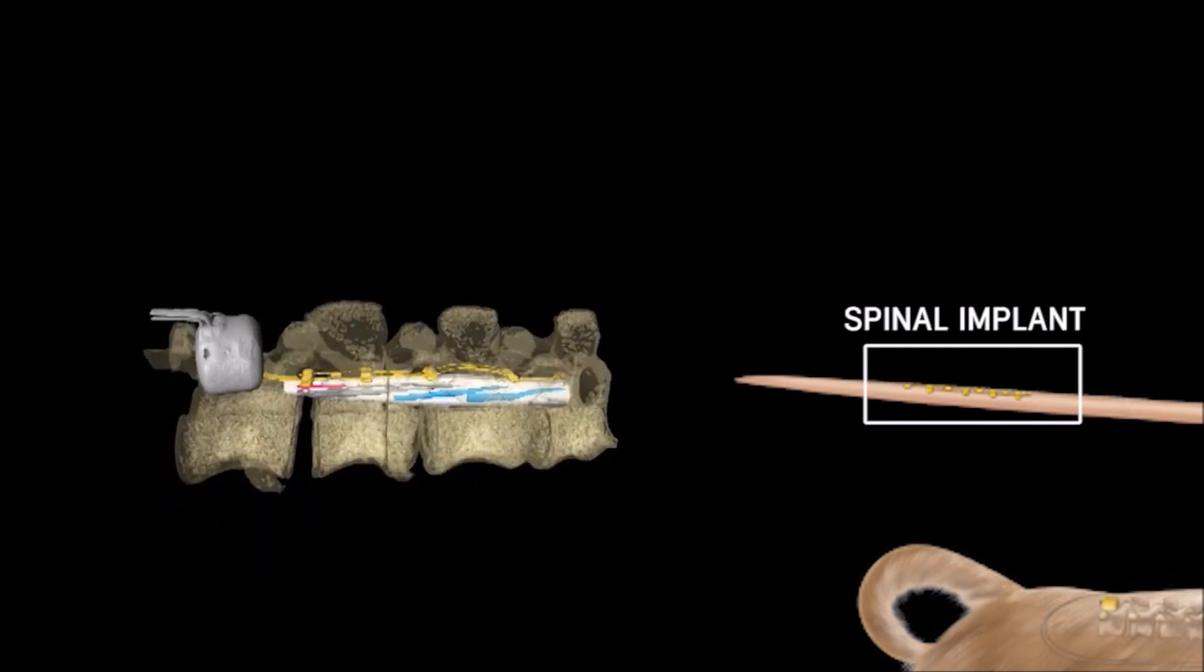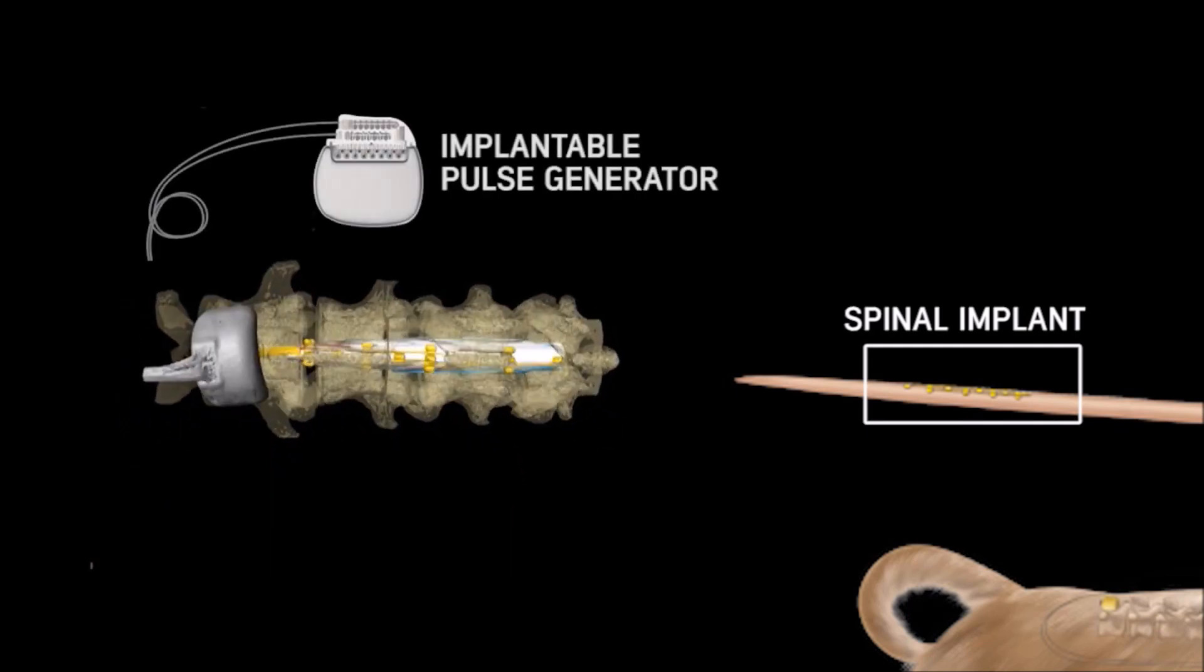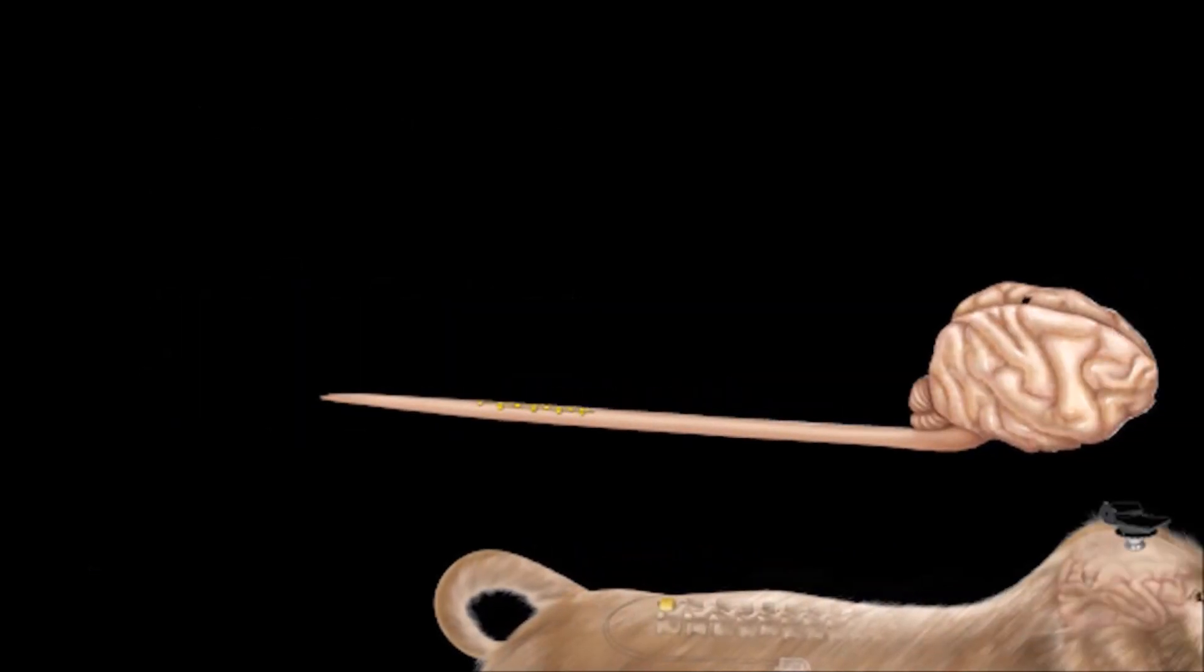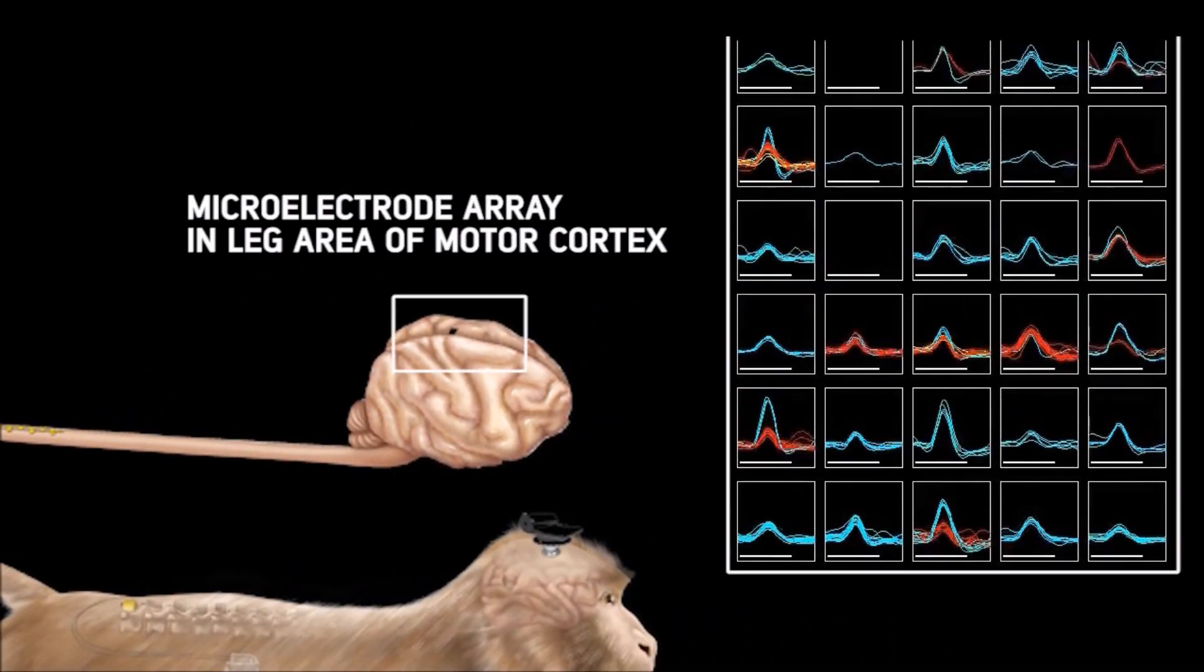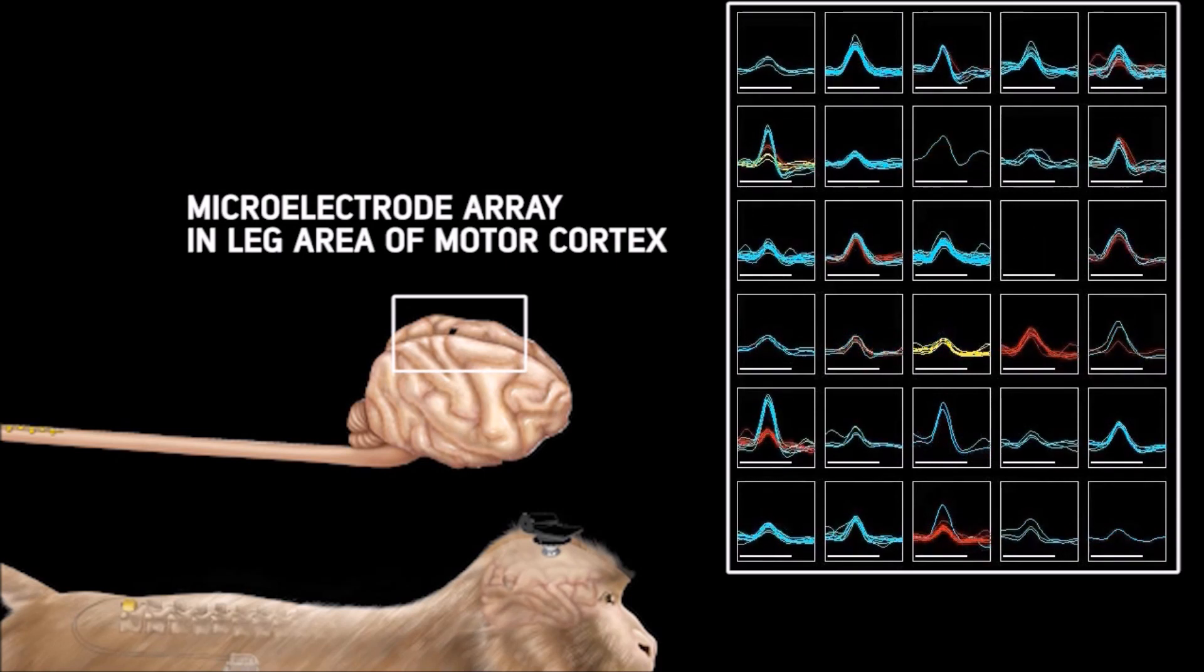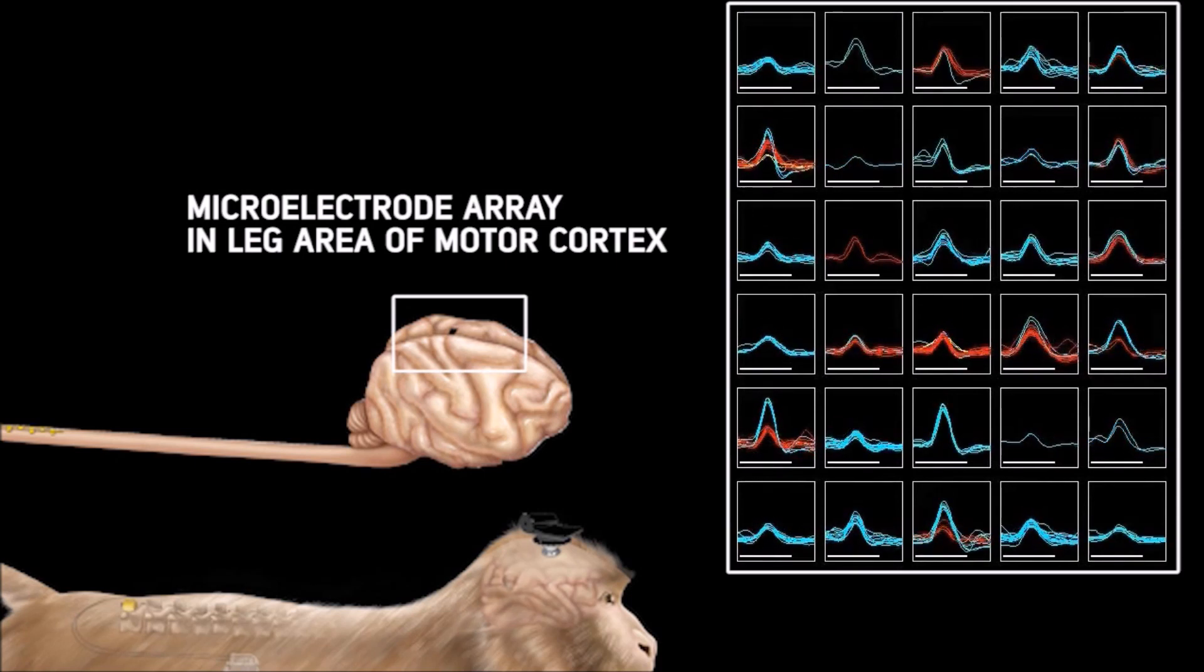This spinal implant was connected to an implantable pulse generator with wireless triggering capabilities. The monkeys also received a microelectrode implant into the leg area of the motor cortex.